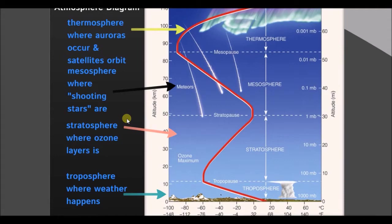Some meteors do make it to the ground — we obviously know that; there aren't many dinosaurs walking around anymore. The larger the rock, the less likely it is to break up into small pieces. The stratosphere is important mostly because it's where the ozone layer is, and the ozone layer is extraordinarily important for us. Ozone is made up of three oxygen atoms — O3 — while the oxygen we breathe is only made up of two oxygen atoms bonded together — O2. When atoms bond differently, their electron configurations differ and they behave like completely different chemicals.